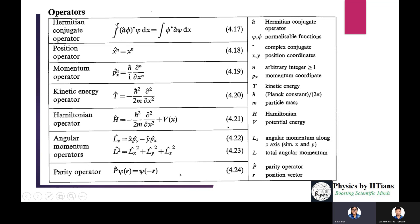The Hermitian conjugate operator satisfies: the integral of (A-hat phi)* times psi dx equals the integral of phi-star times A-hat psi dx. So the integral of phi-star (A-hat psi) dx equals the integral of (A-hat phi)* times psi dx — this defines the Hermitian operator.